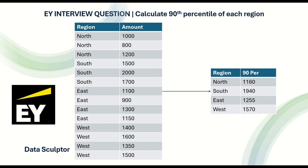So here, the 90th percentile means the threshold of the revenue for each region. In this example, for the north region you have three values: 1000, 800, and 1200. Between 800 and 1200, which are the minimum and maximum, what is the 90th percentile? This is the question which we have to solve in SQL.